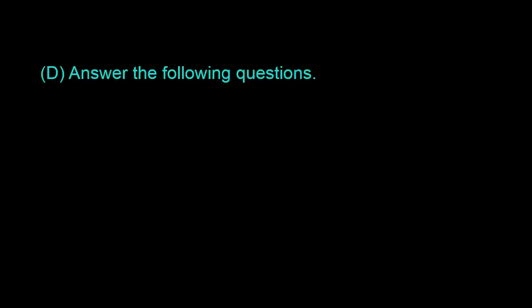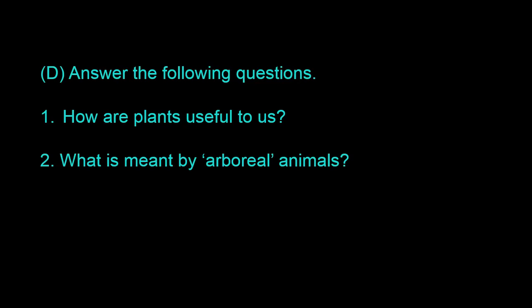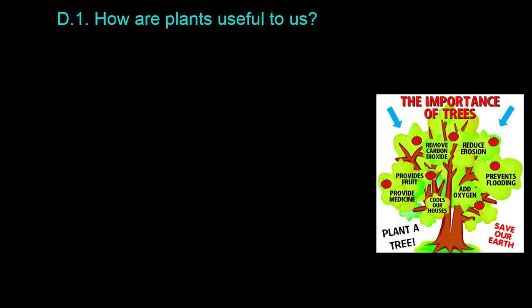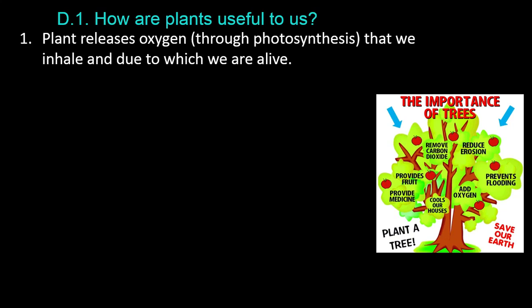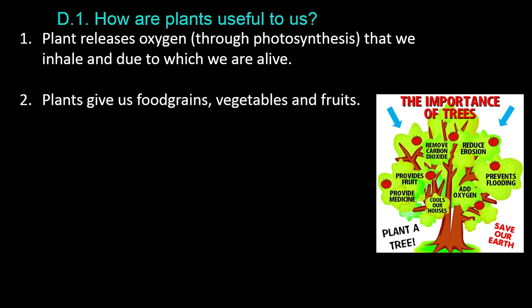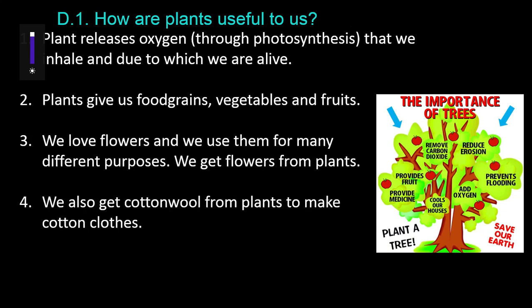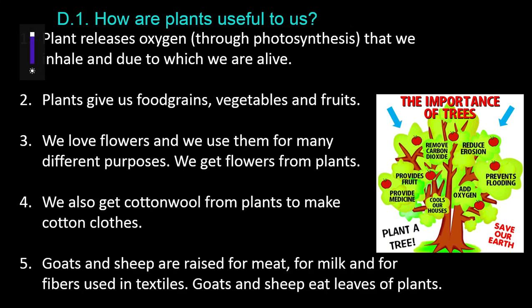Question D — Answer the following questions. D.1: How are plants useful to us? 1. Plants release oxygen through photosynthesis, which we inhale and due to which we are alive. 2. Plants give us food grains, vegetables, and fruits. 3. We love flowers and use them for many different purposes; we get flowers from plants. 4. We also get cotton wool from plants to make cotton clothes. 5. Goats and sheep are raised for meat, milk, and for fibers used in textiles; goats and sheep eat leaves of plants.